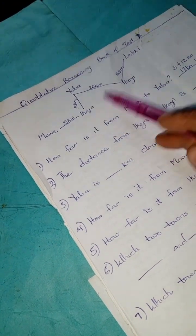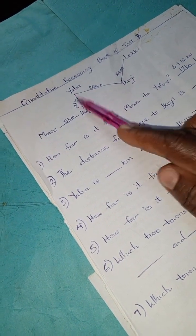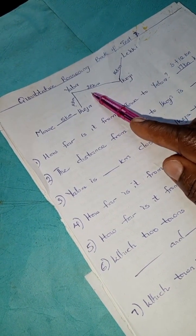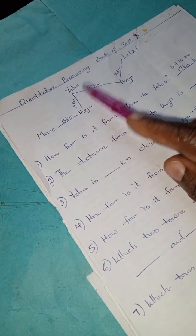The distance from Ikeja to Ikoyi: Ikeja to Yaba is 12 kilometers, and Yaba to Ikoyi you have 20 kilometers. 12 kilometers plus 20 kilometers, you have 32 kilometers.